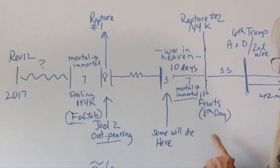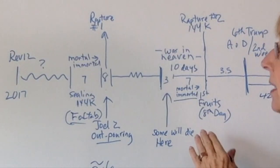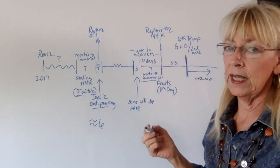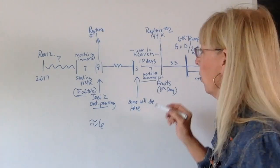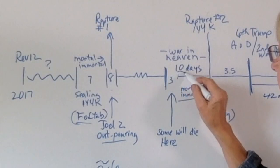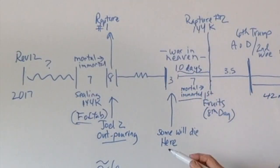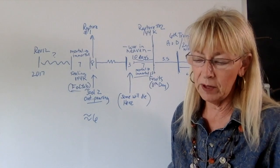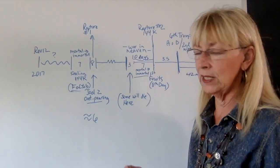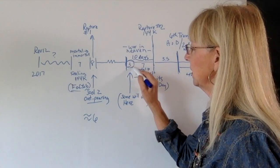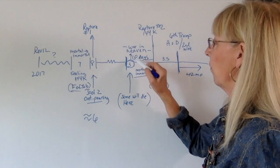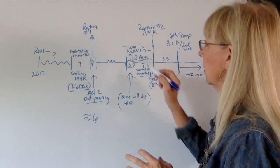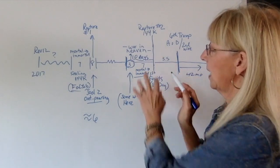Firstfruits is also the same day the two witnesses are going to be killed and the same day Satan is cast out of heaven. The war in heaven probably only lasts seven days because Satan will also be here casting some of these people into prison. What that leads me to believe is that Satan may be here on earth for three days, then go into heaven for a seven-day war.